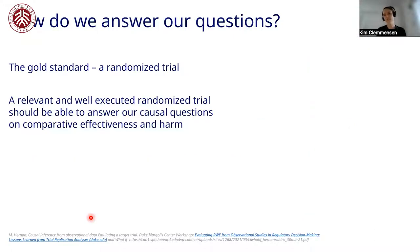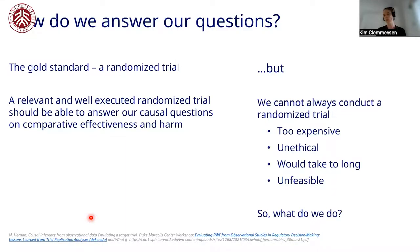The gold standard would be to do a randomized control trial, because with a relevant and well-executed trial we should be able to answer our causal question on comparative effectiveness and harm of a specific treatment. However, this is in no way always possible: it is really expensive, it can in some cases be unethical, it takes a really long time, and it can simply not be feasible to recruit the patients needed for a specific trial.